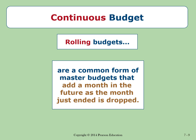When we speak about a continuous budget — also called a rolling budget — this refers to adding one month or one quarter in the future as the current month just ended and is dropped from the budget schedule.